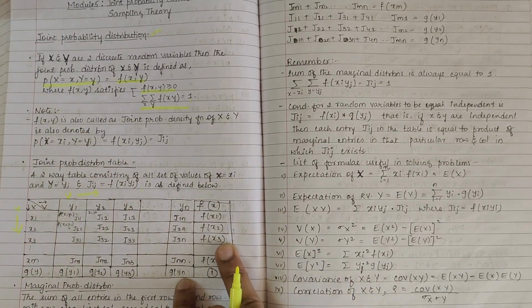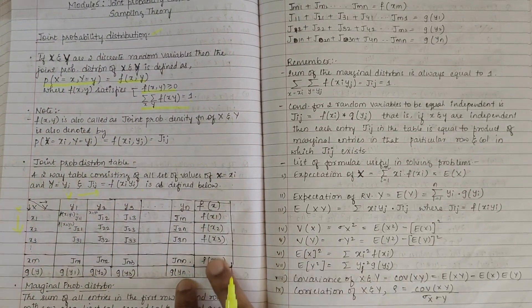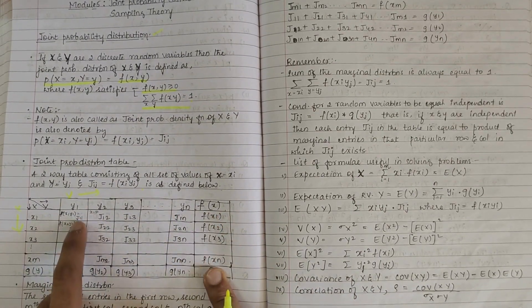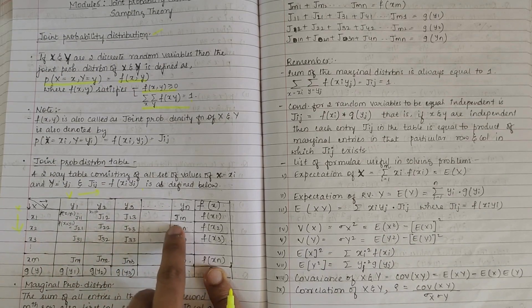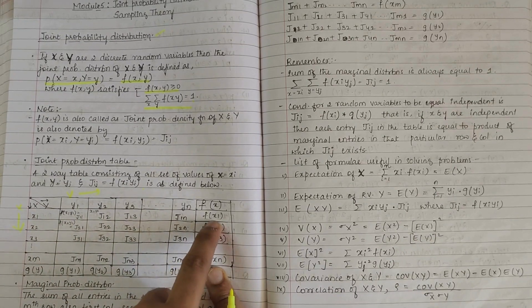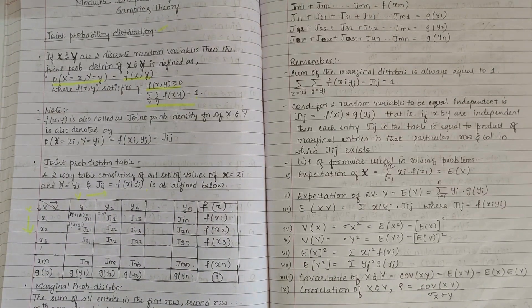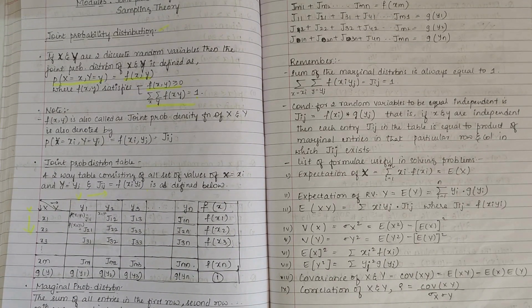For calculating f(X1), you should add j11 plus j12 plus j13 and all of that, you'll get f(X1). We'll understand how to calculate j11. So j11 can be calculated as X1 into Y1.